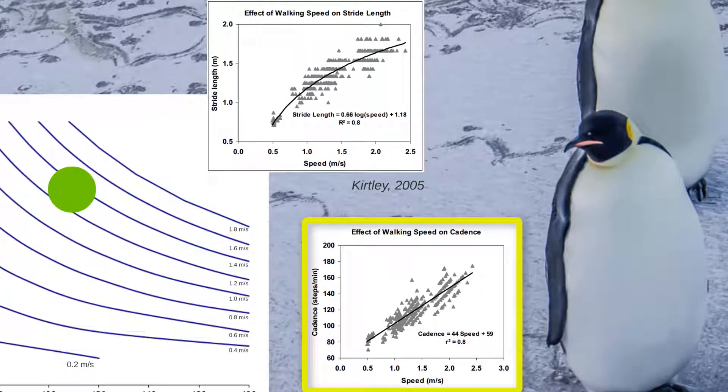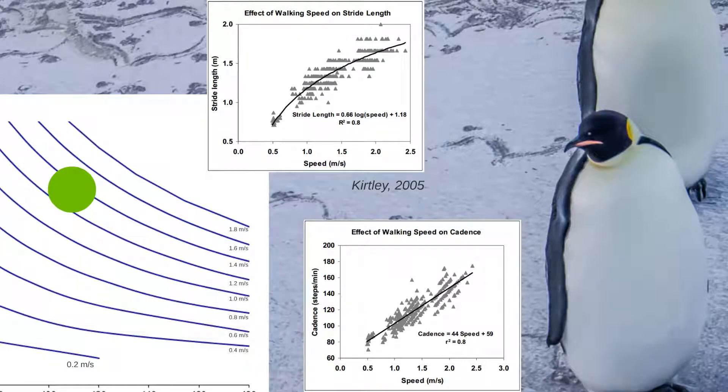Moreover, while the cadence increases linearly, the step length, which is more constrained by the physical aspect, increases logarithmically. It can change greatly at low speeds, but tends to stabilize at higher speeds. Solely considering walking speed is not enough to properly analyze the progress of a subject over time. Why is the step length and step rate configuration important?